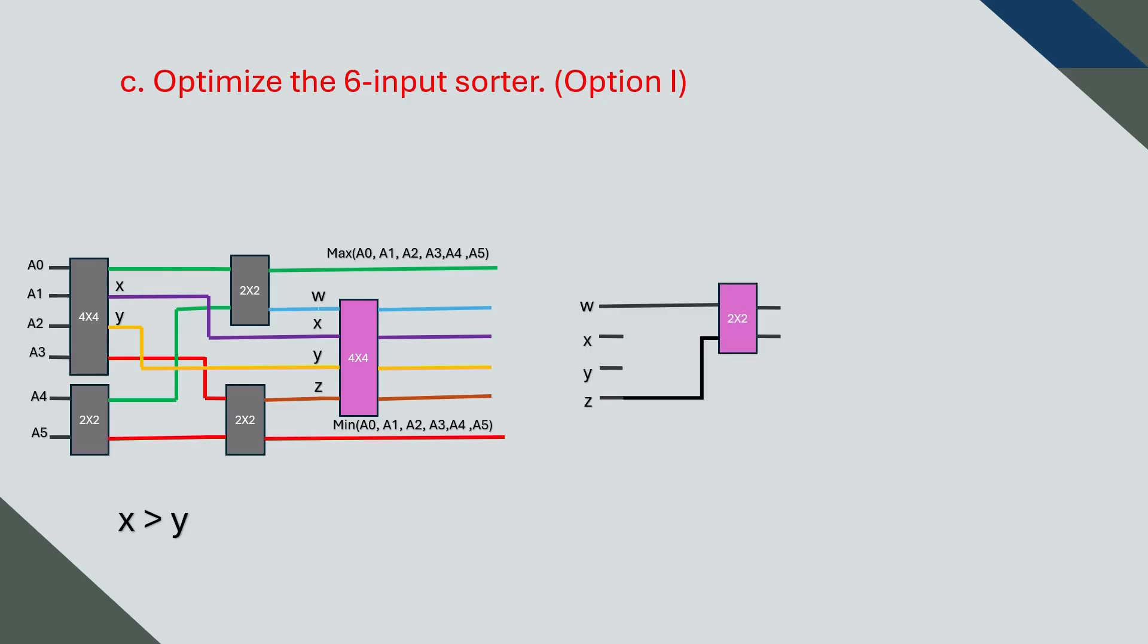Since we don't have any prior knowledge about w and z, we will send them into their own two-on-two sorter to determine which is larger and which is smaller. Next, we take the larger of w and z and feed it into another two-on-two sorter together with x which we already know is greater than y. This gives us the maximum value of all four inputs.